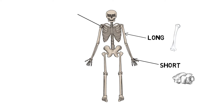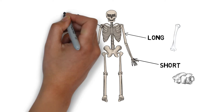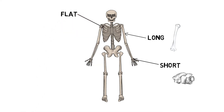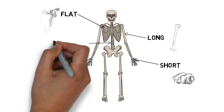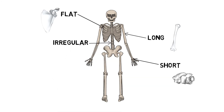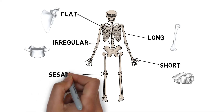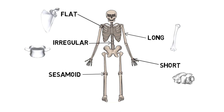Flat bones are strong, thin, flat plates, such as the scapula or sternum. Irregular bones are unique and are unlike any other type of bone, such as vertebrae or the sacrum. And sesamoid bones, that are usually short or irregular bones embedded in with a tendon, such as the patella.